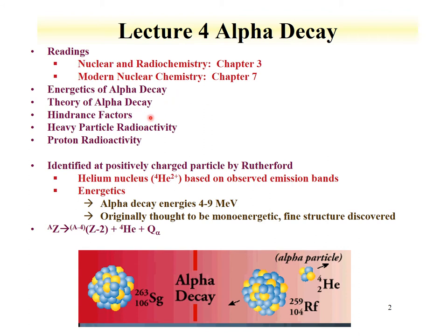As we presented in our very first lecture on the history of modern nuclear physics and radioactive decay, Ernest Rutherford and his team identified a positively charged particle being emitted from the nucleus. The helium-4 nucleus was based on observed emission bands. And so from this point, it was clear that a particle of two protons and two neutrons was coming out of the nucleus.